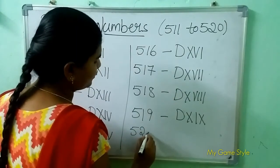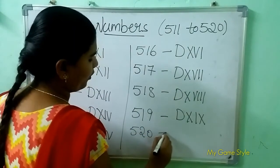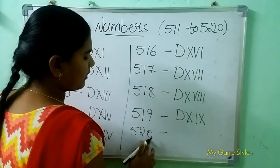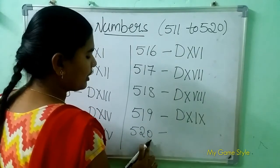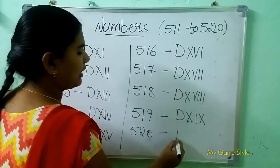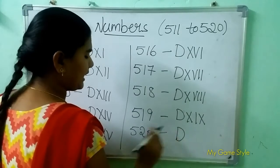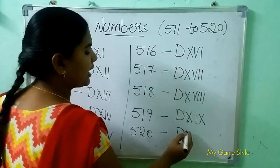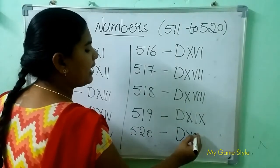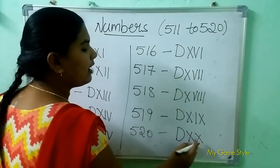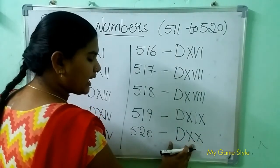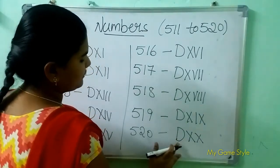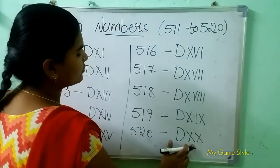520 means 520. D is 500. XX is 20. So this means 520.